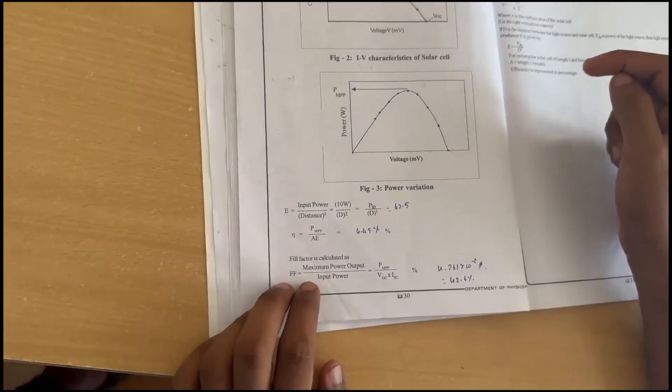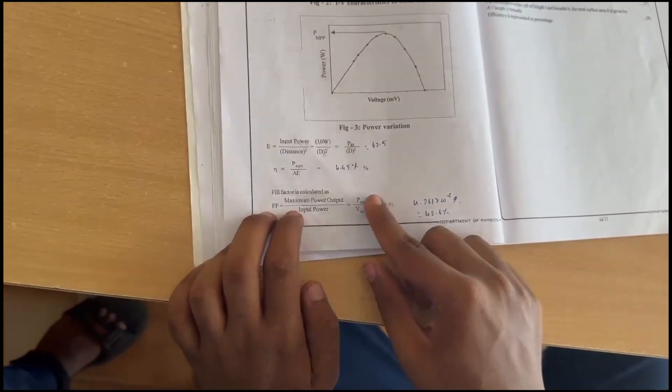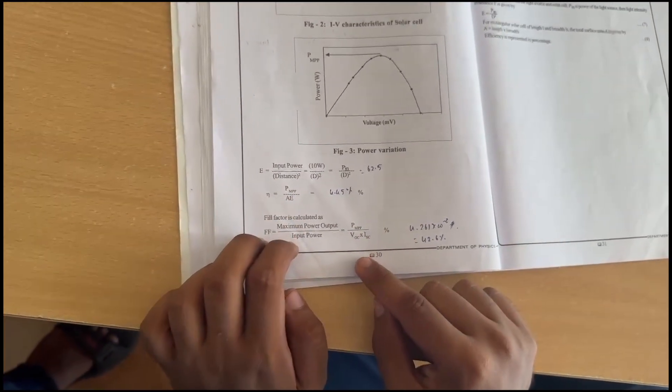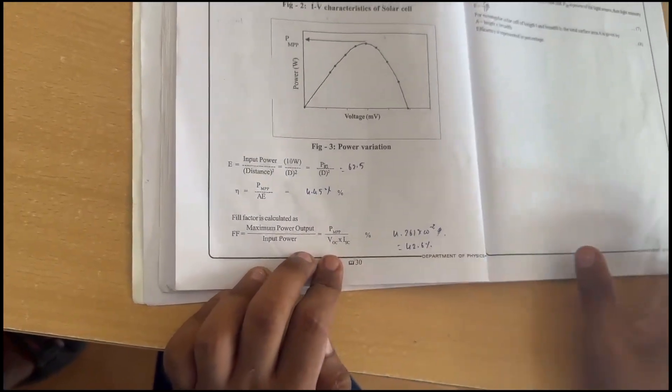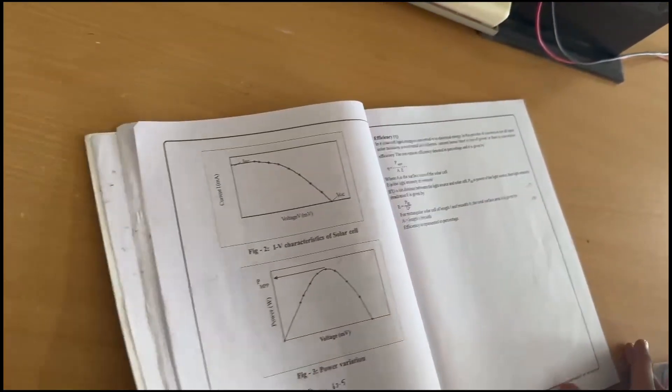The fill factor (FF) is calculated as P_MPP divided by V_OC × I_SC, which gives 42.6 percent. With this, the experiment is complete.